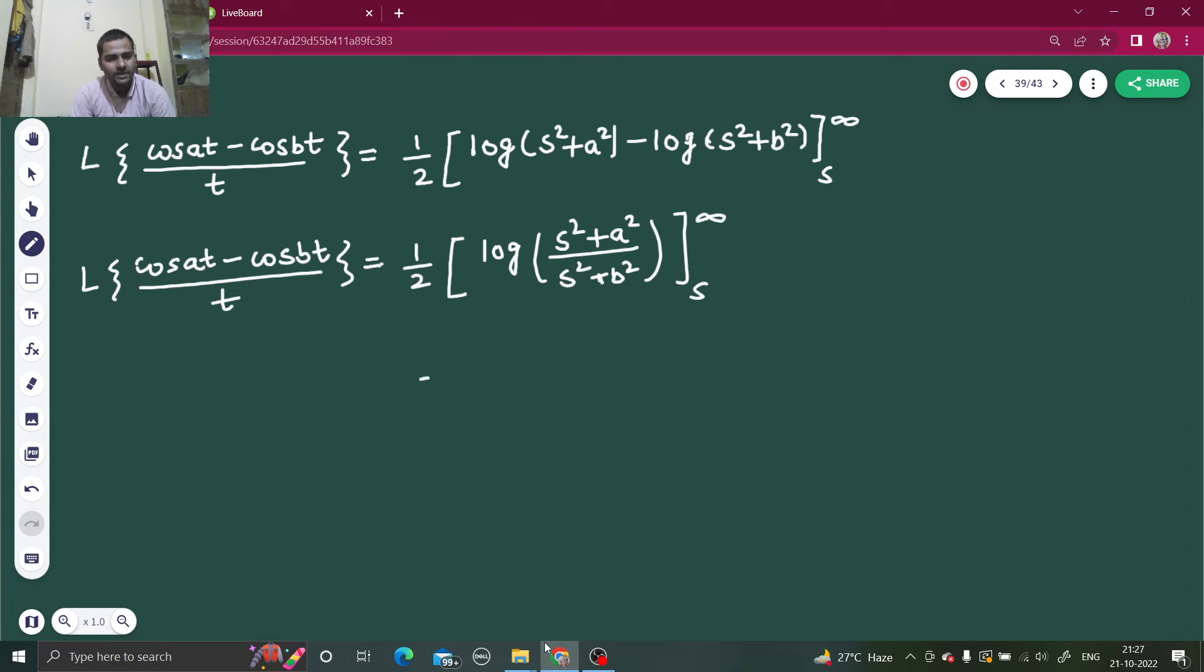Okay so if inside log if you divide the numerator and denominator by s square because infinity limit we have to put, so you have this 1 plus a square by s square over 1 plus b square by s square. Now if you put limit as infinity, 1 upon infinity is 0, so log 1 by 1 which is log 1 and log 1 is 0, so you will get half 0 from upper limit and if you put lower limit you will get back the same thing which can be rearranged like this only.